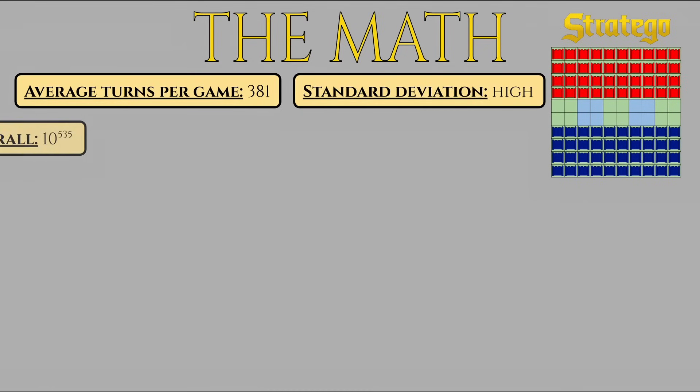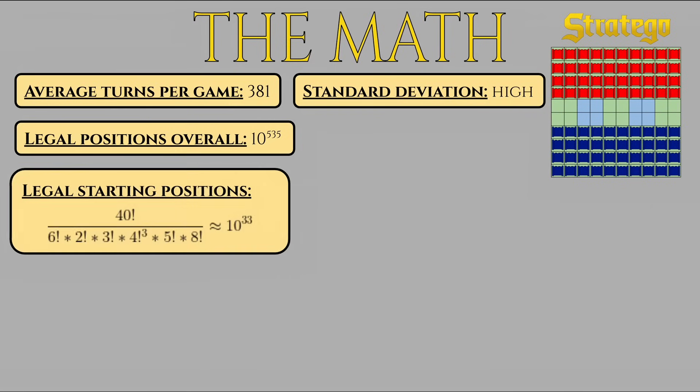There are 10 to the power of 535 legal positions. For reference, the universe has been existing for less than 10 to the power of 18 seconds, so you would need a mind-boggling amount of parallel universes before you saw every legal position. Even the amount of legal starting positions is 10 to the power of 33, or 1 decillion in English. Once again, longer than the amount of seconds that have passed in the known universe.